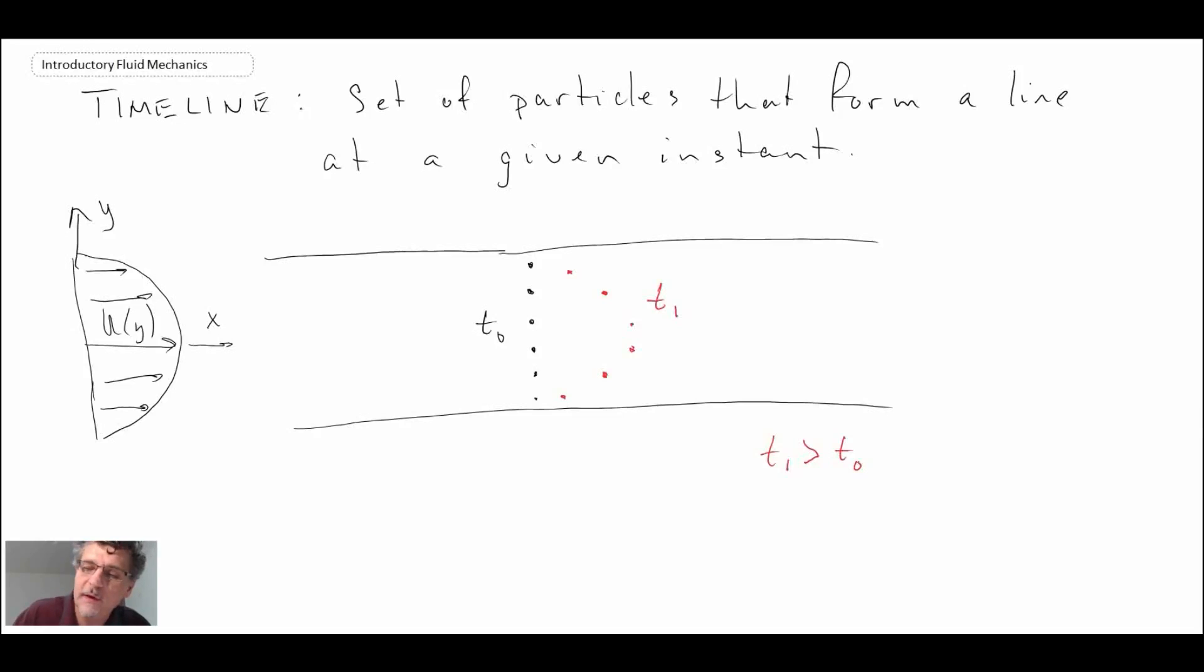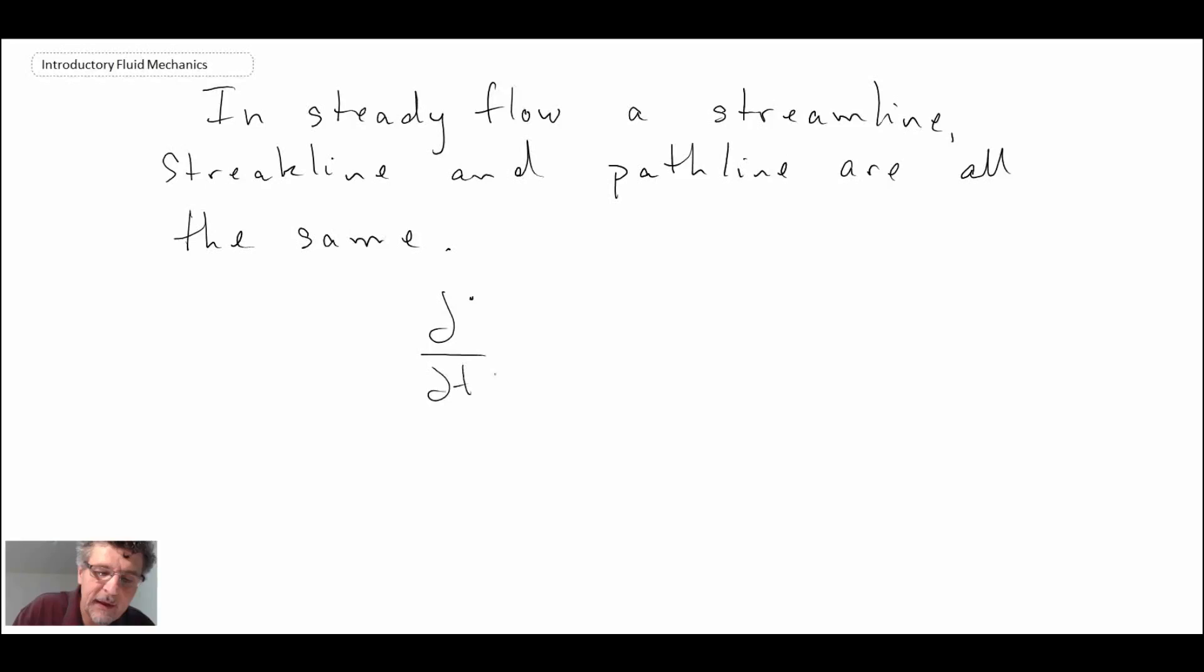Those are different methods by which we can visualize fluid flows. It turns out that in steady flow, if it is not changing with respect to time, that would be a flow where d by dt of any term is equal to zero. If you have steady flow, streamline, streakline, and pathline are all the same.